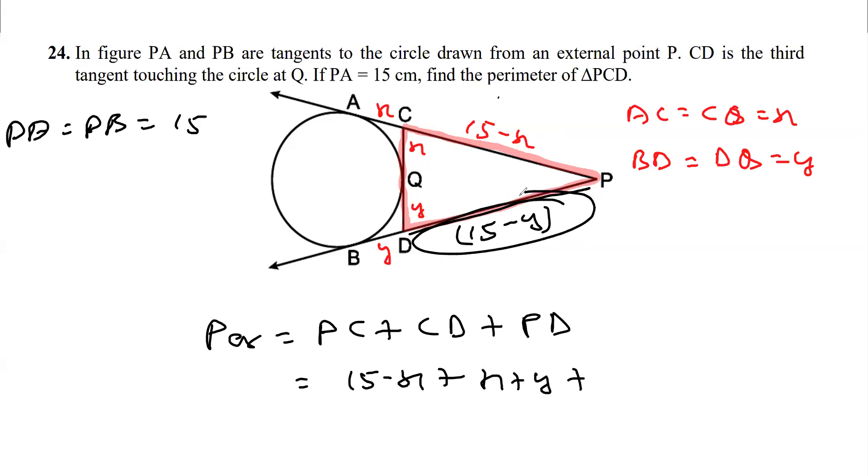And PD, if you see, PD length is 15 minus y. Now here positive x and negative x get cancelled, same way y and minus y get cancelled. So we'll get this as 15 plus 15, that is 30. So the required perimeter is 30 centimeters.